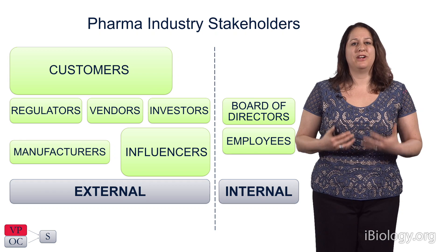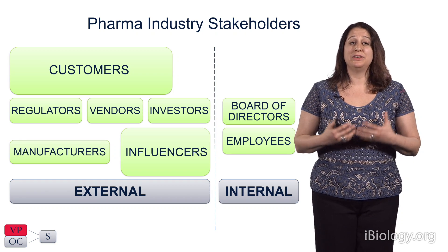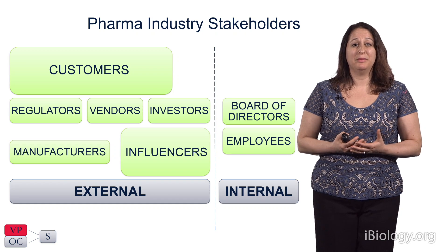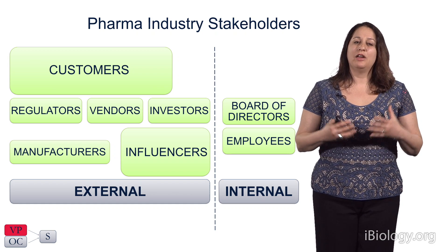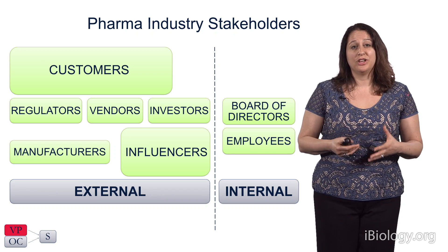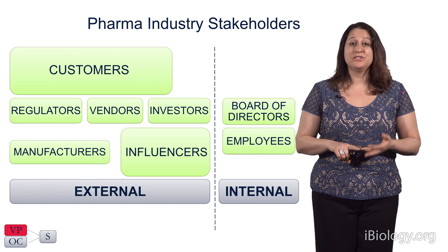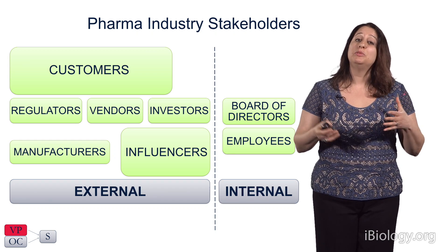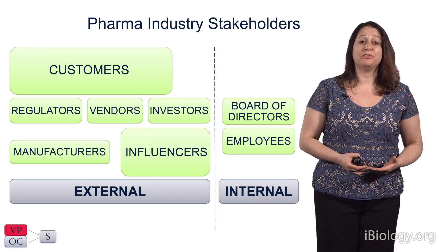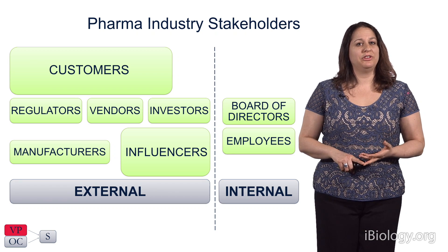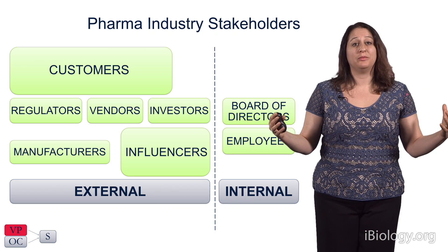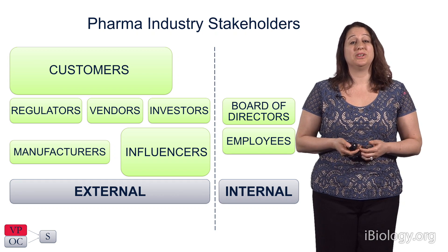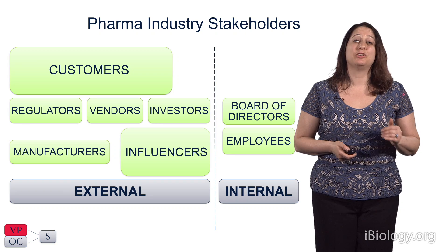This complexity gets even more critical when you think about pharma industry stakeholders. We still have employees as a group and investors — the people funding the work. But now there are new levels of complexity. For example, customers for the pharma industry could include providers, patients, or payers — each with very different interests. And even within those subcategories, a provider could be a doctor, a nurse, a pharmacist, a hospital, or even a hospital system. Pharma companies spend a lot of time thinking about their strategy with respect to each of those customer stakeholder groups.